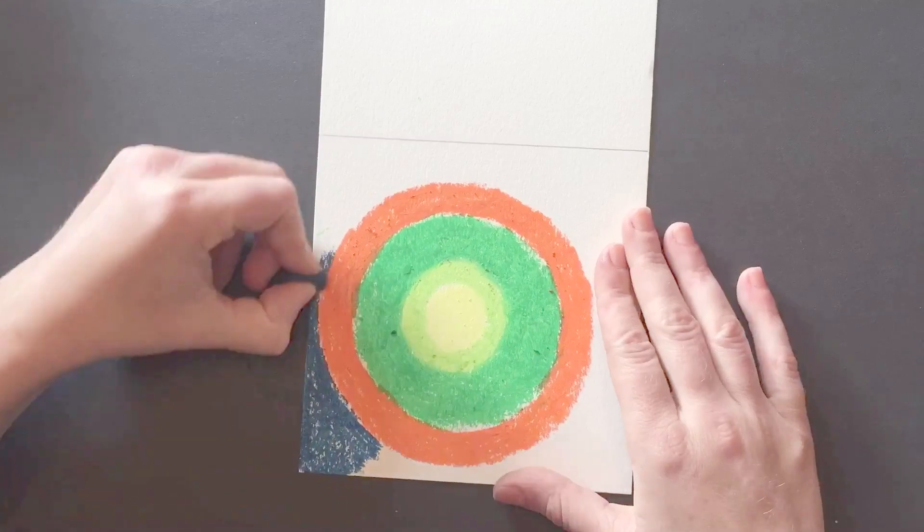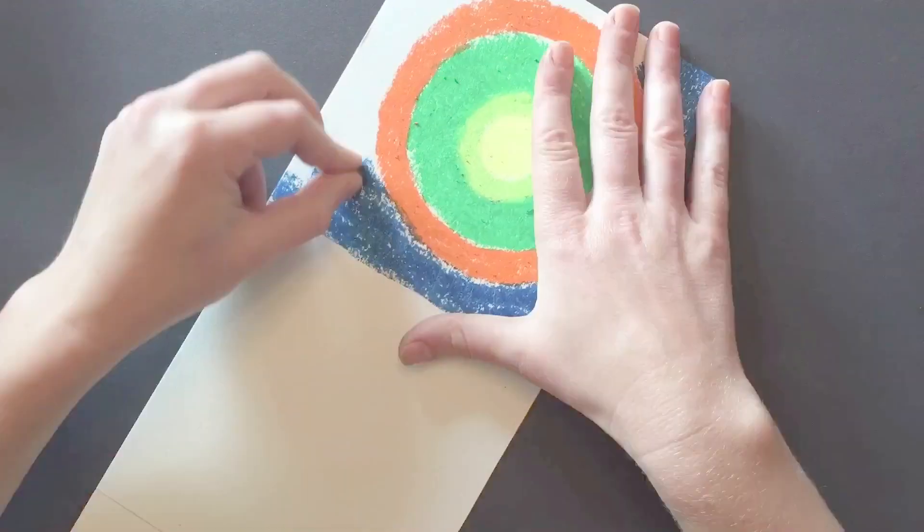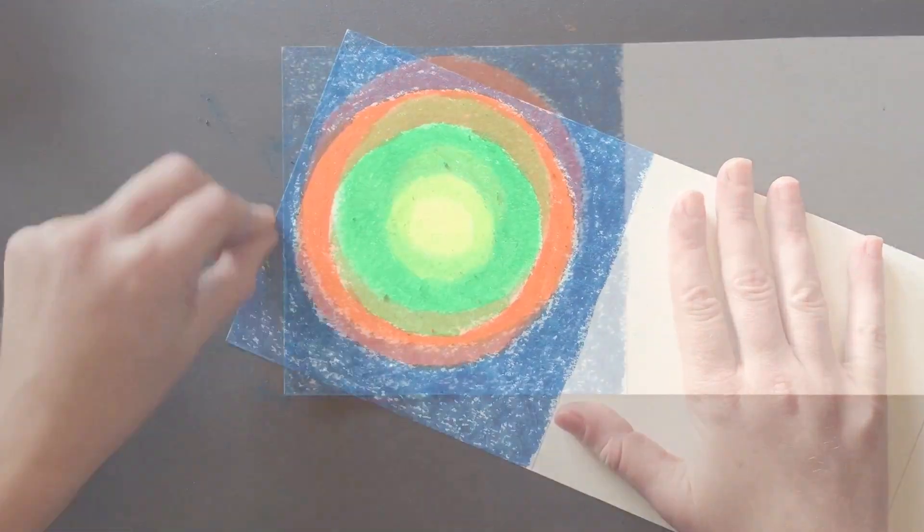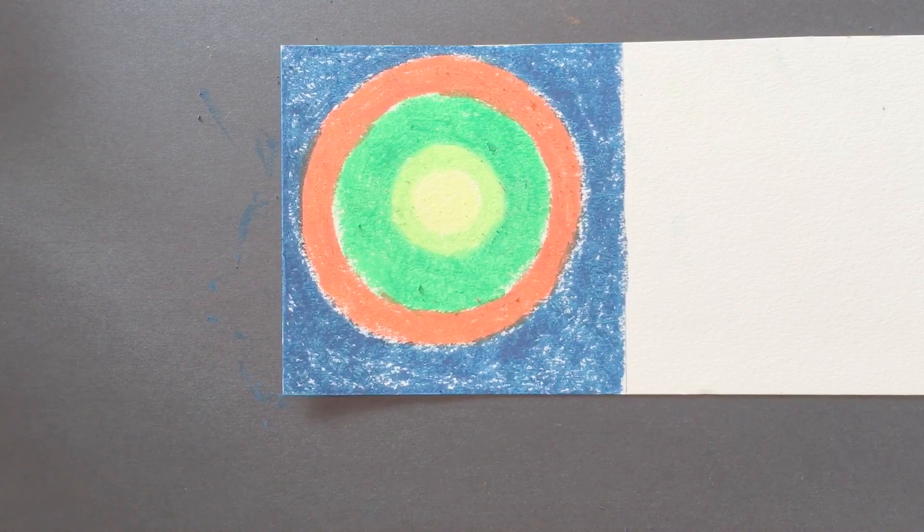When you are near the edge of your first square, pick a color to fill the rest of the square in with. You have now completed your first dot.